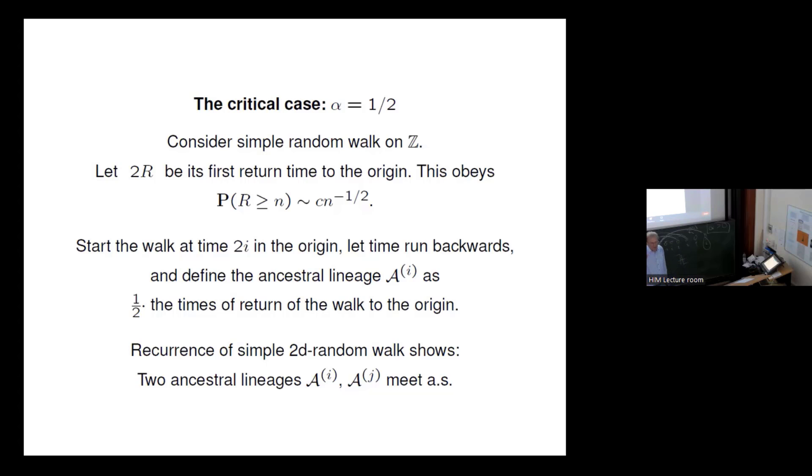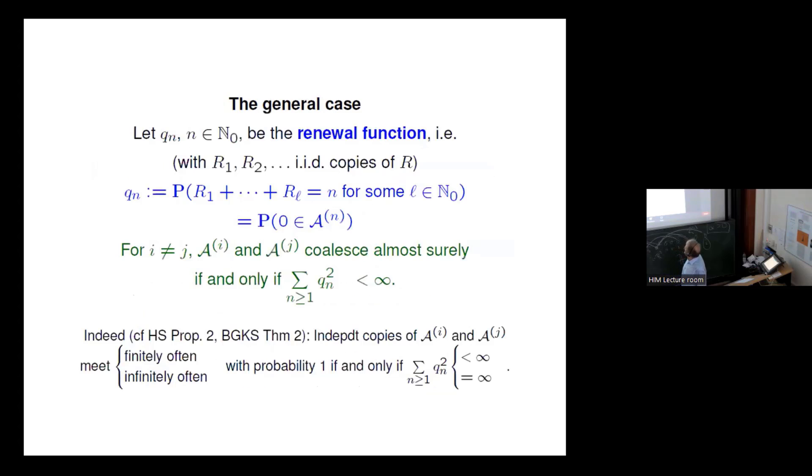And so the general case, when we have a renewal function, this is the best way to think of it: q_n is the probability, I should point here, the probability that zero is in the ancestral line of n. This probability that zero, we have here zero, is just the renewal function q_n.